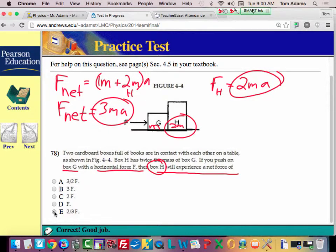So if you take the proportion of H over the total, it would be like 2MA over 3MA. The MA's cancel, and you're left with 2 thirds, 2 thirds of the force, or 2 thirds of F net. Does that make sense to you guys?